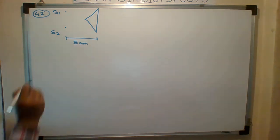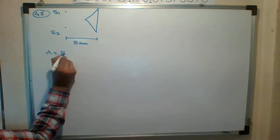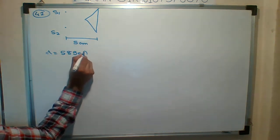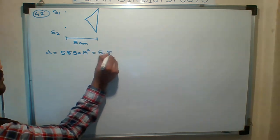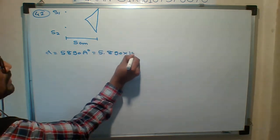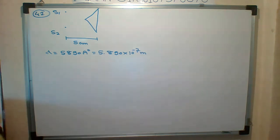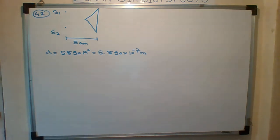Now wavelength is given. How much is it? 5.890 into 10 to the minus 7 meter. I have to tell this.